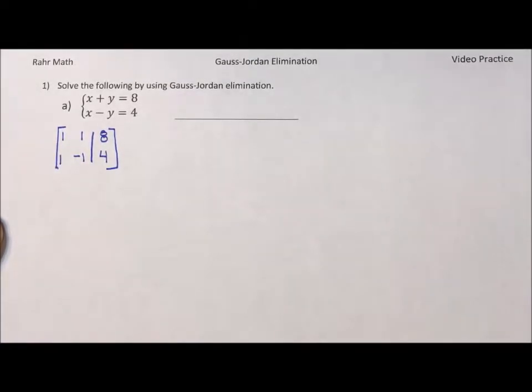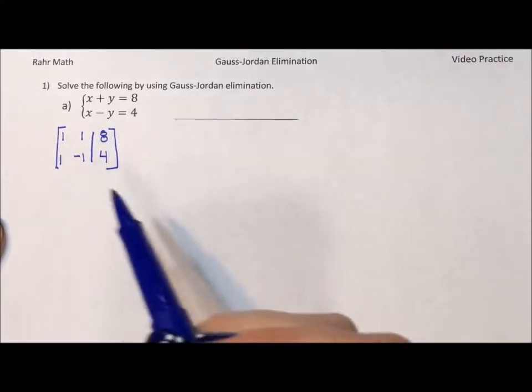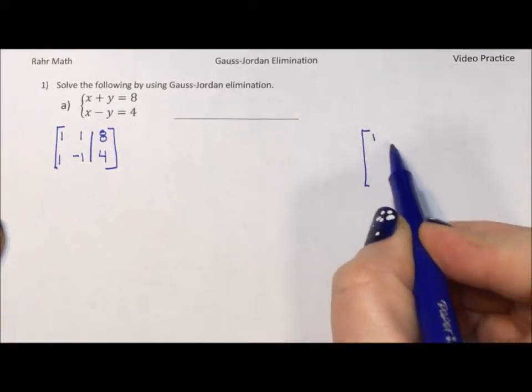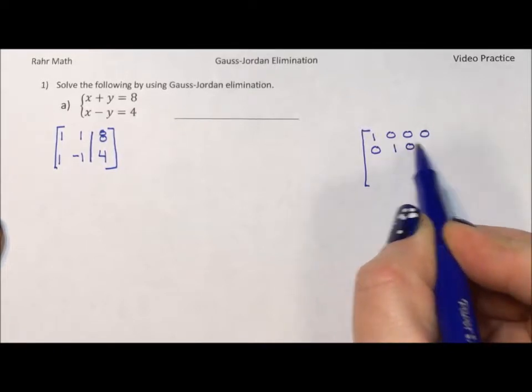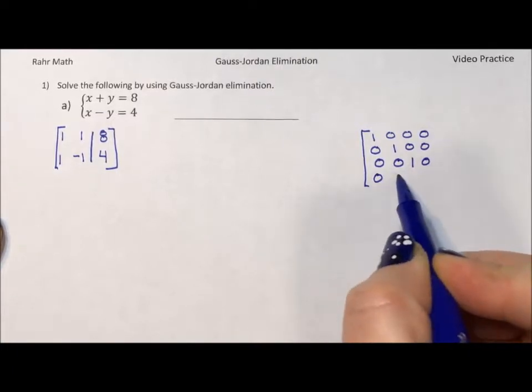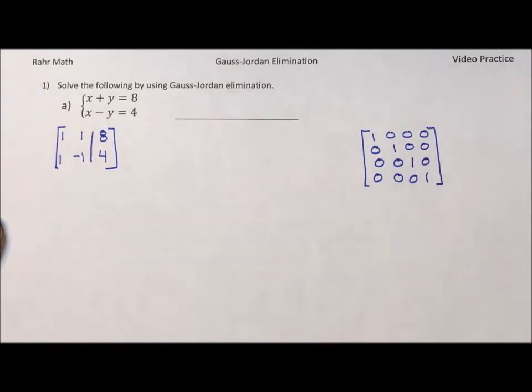What we do when we are using elimination is we're trying to get all of the major diagonals. So a matrix can have many more rows and columns and an identity matrix is one where everything is zeroed out except everything along this main diagonal. This is an identity matrix.